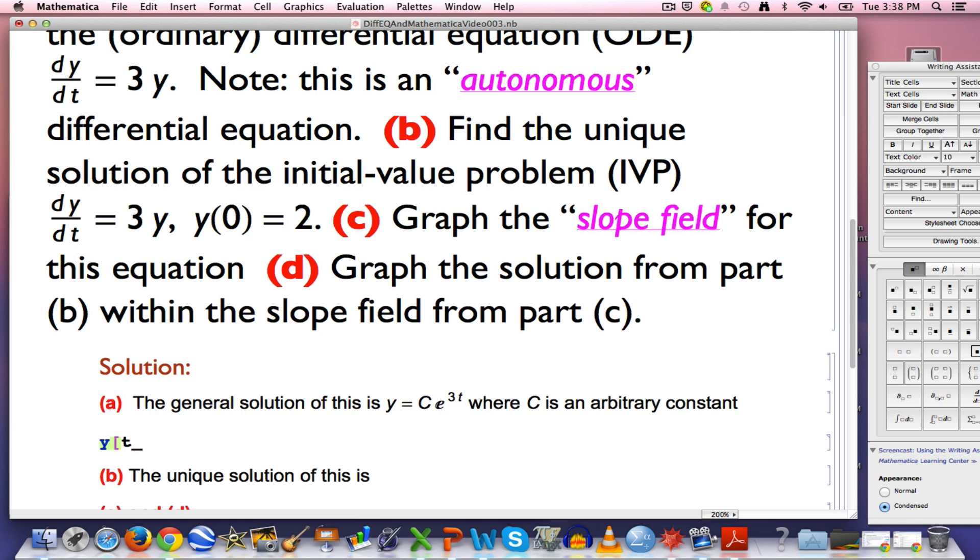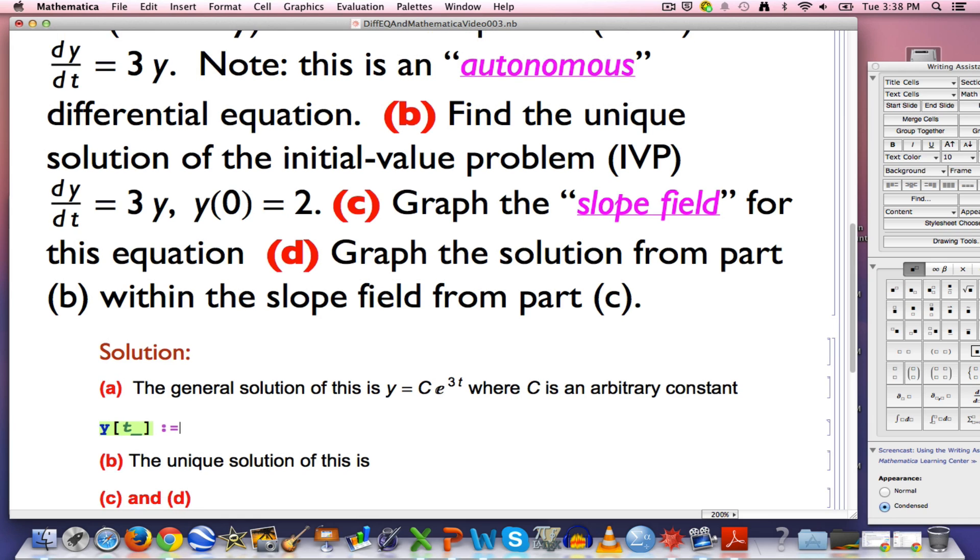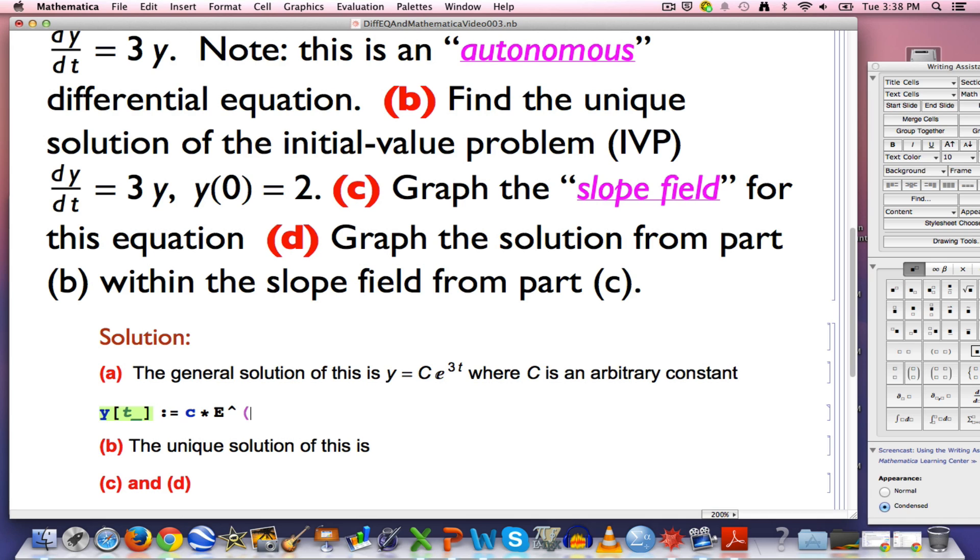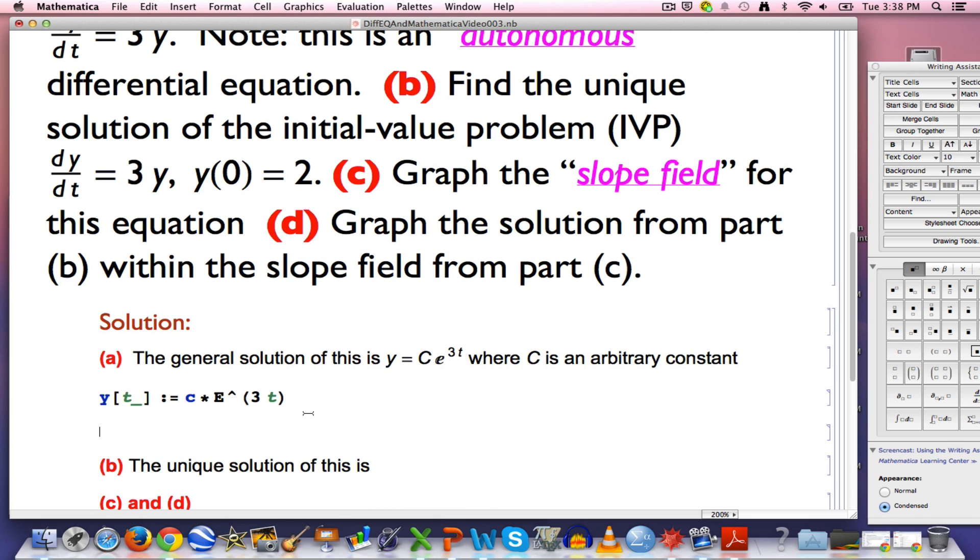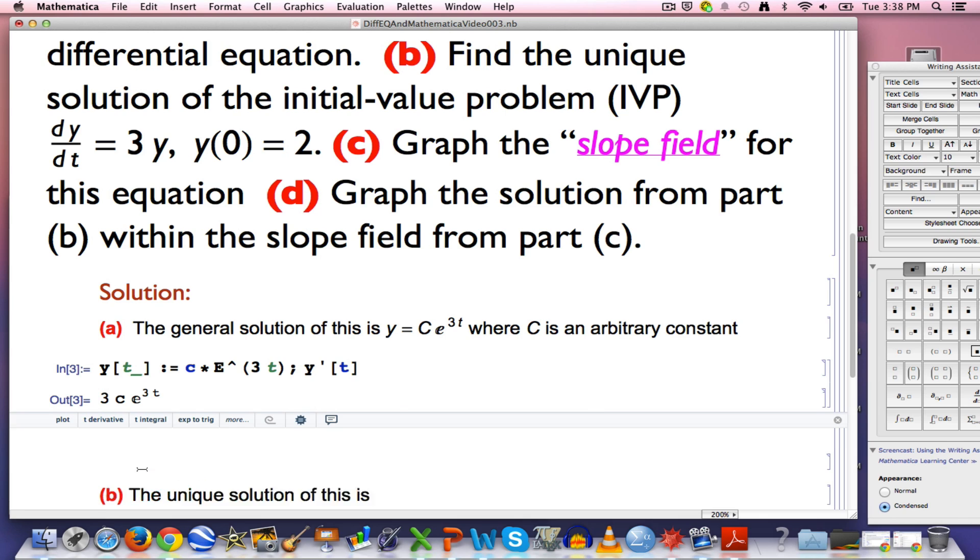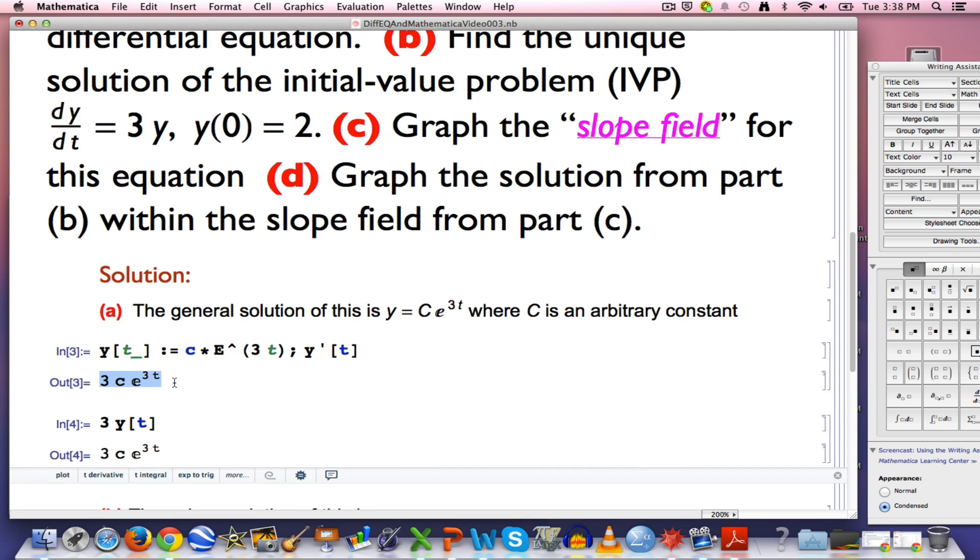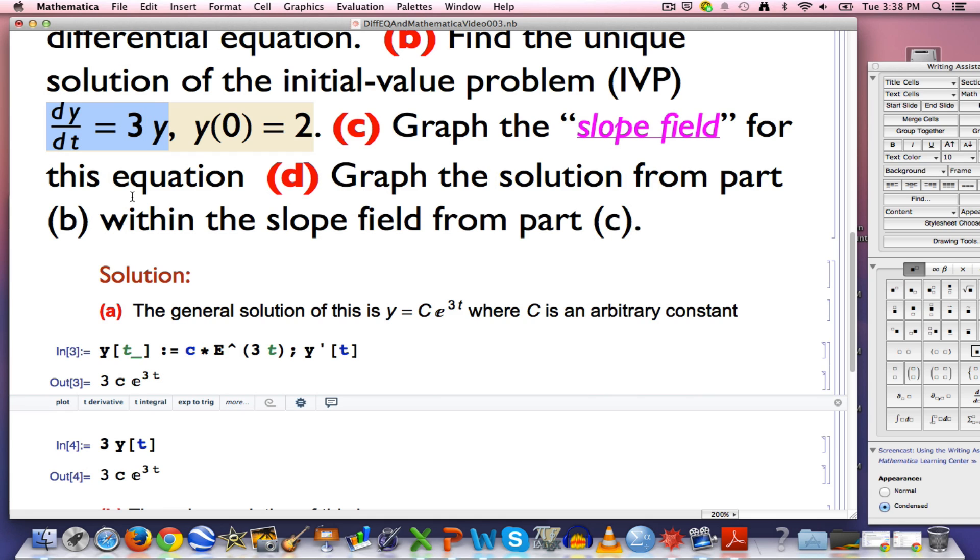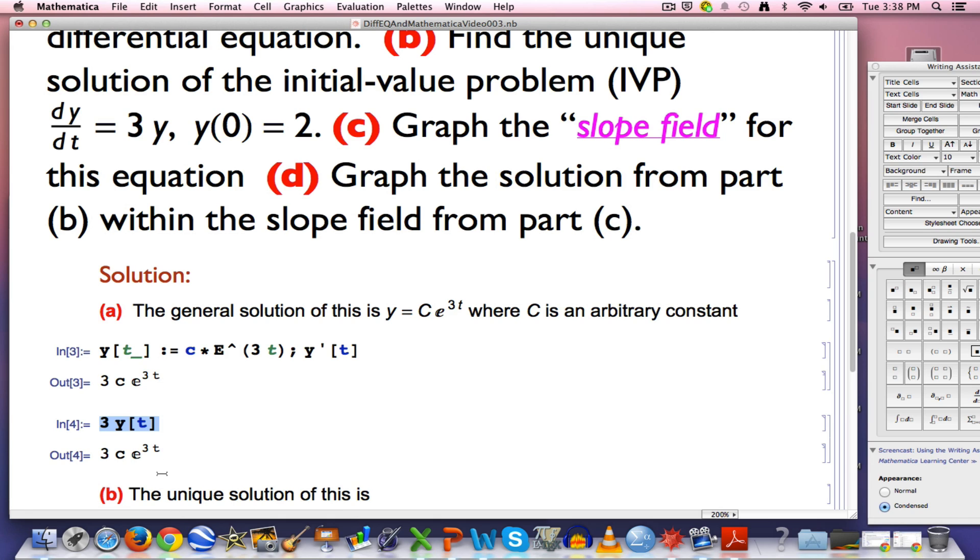We can check this symbolically on Mathematica in a few different ways. We could first define a function y of t to equal c times e to the 3t. I need to use a lower case c here, whereas I am using an upper case c here. Capital E is necessary here to use the number e. If I differentiate this function, what do I get? I get 3c e to the 3t, just like I said before. And if I take 3 times this function, what do I get? I get the same thing. That is what it means for this function to solve that differential equation dy/dt equals 3y. The left hand side, the derivative, always equals the right hand side 3 times the function. The function does explicitly depend on t, but the right hand side of the differential equation, when written by hand, does not.